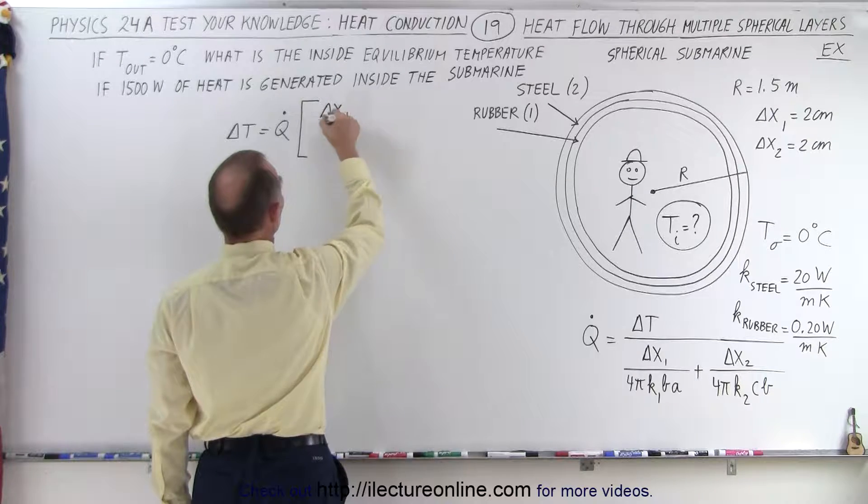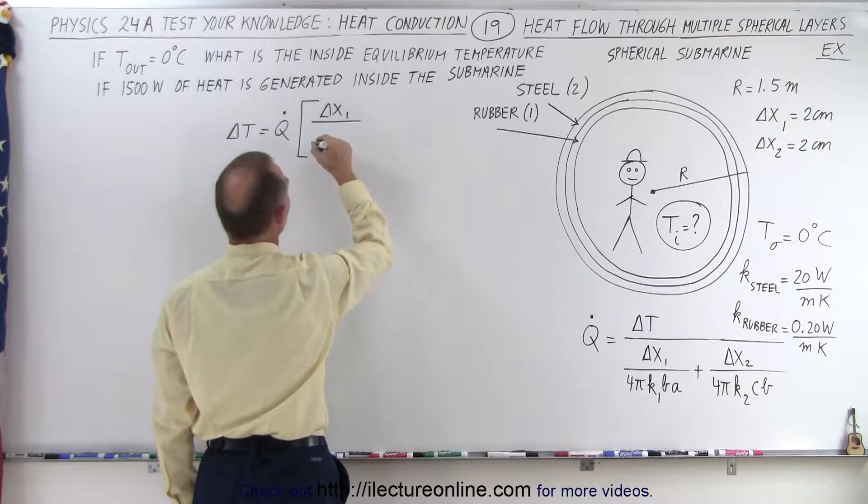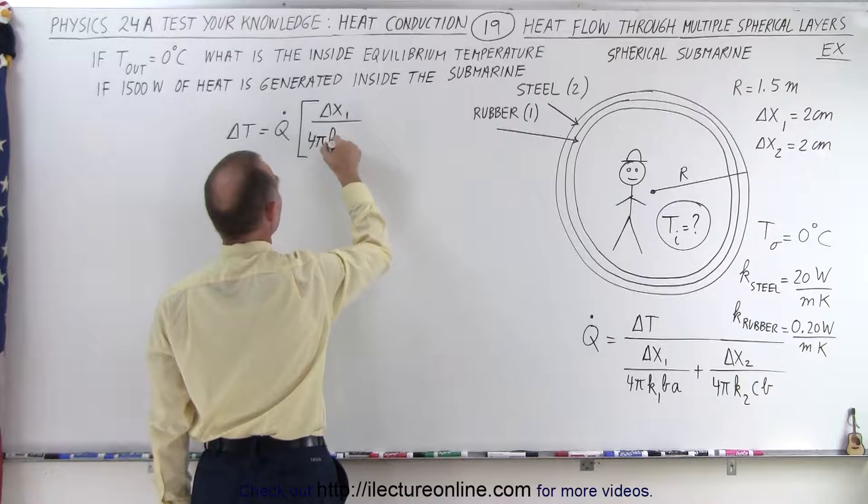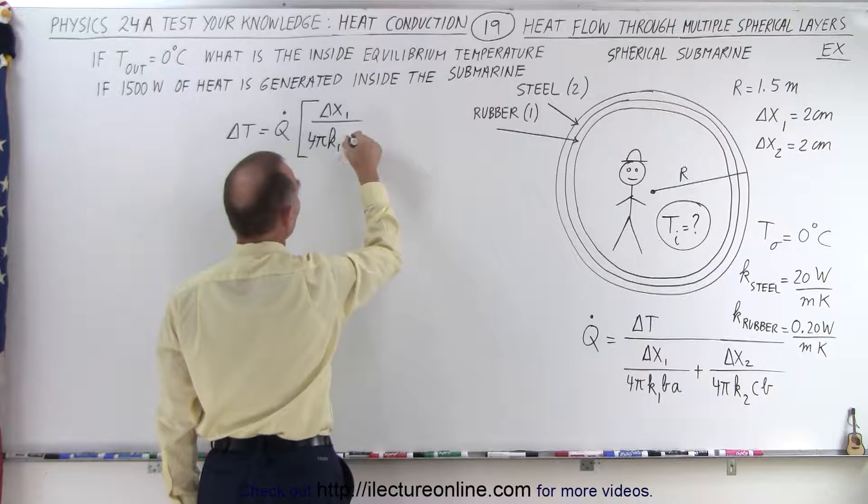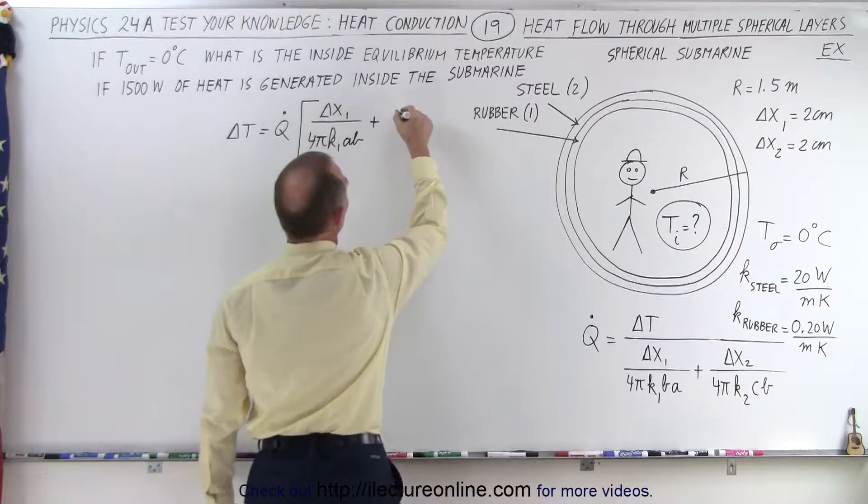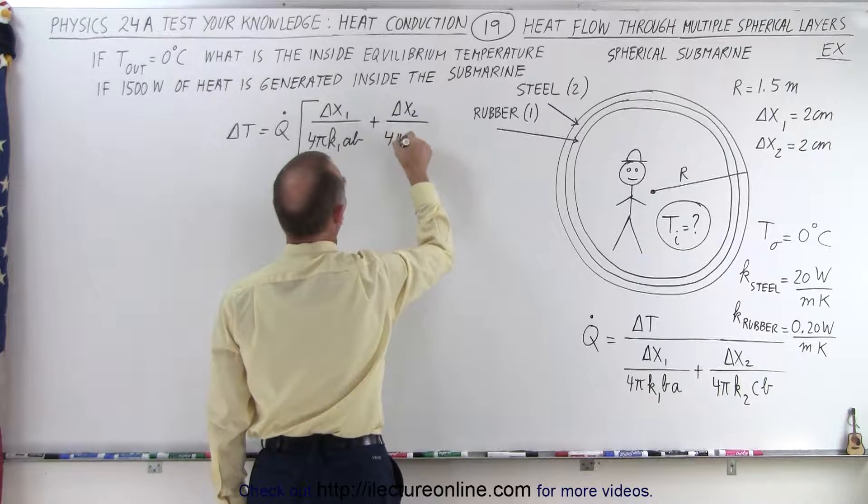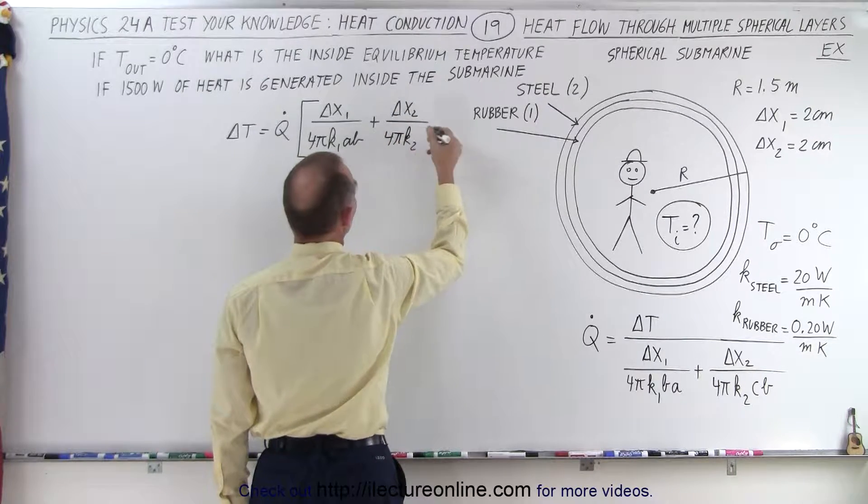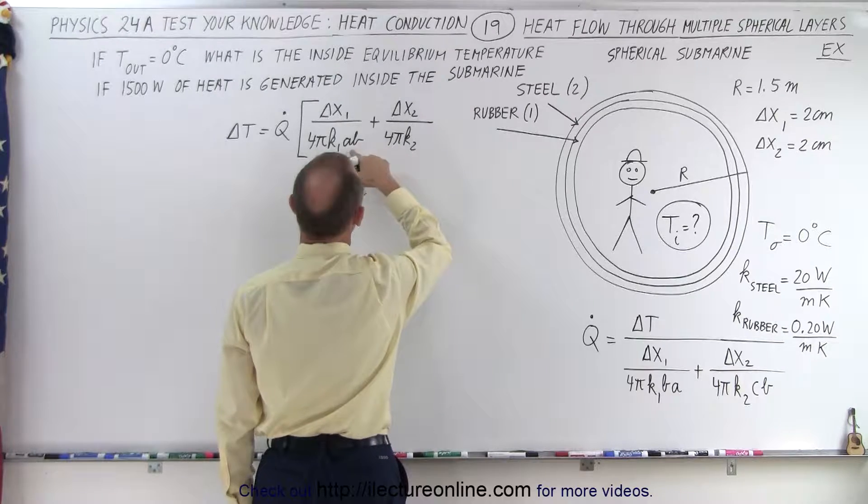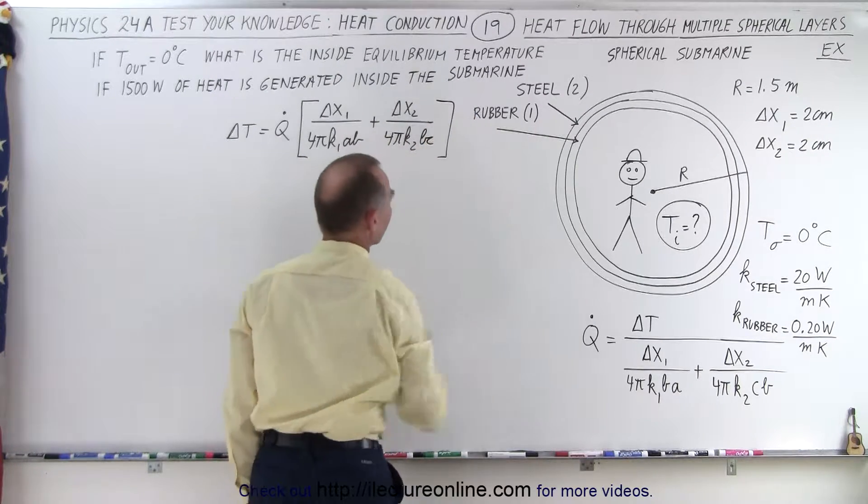So that would be delta X1, which is the thickness of the first layer, divided by 4 pi K1 times AB, plus the thickness of the second layer, divided by 4 pi K2 times, and that would of course be AB, that would be B times C, like this.